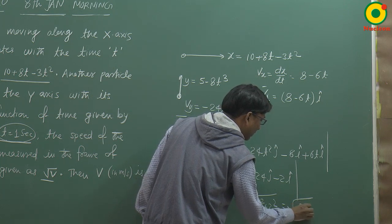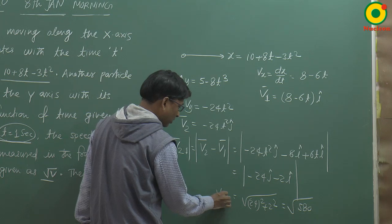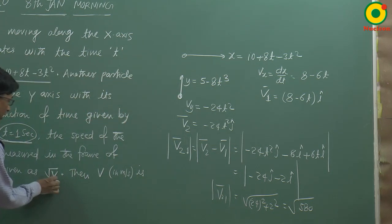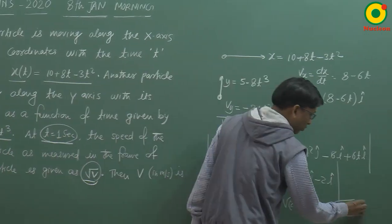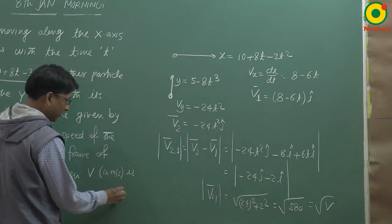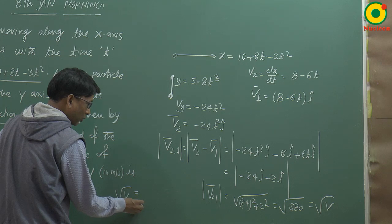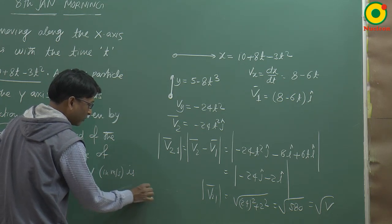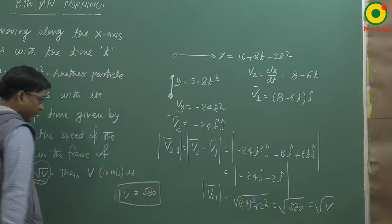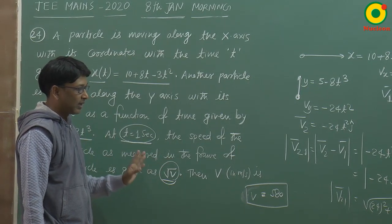Magnitude आया √580। इसका magnitude question में दिया गया है √v के equal। तो √v = √580, यानी v का value आया 580। तो इसका correct answer है 580।